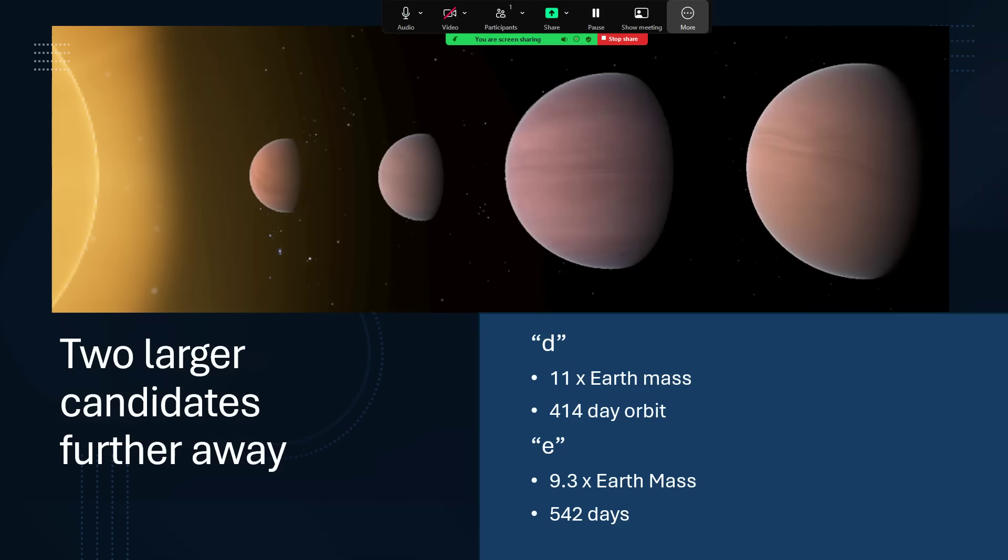And we also have two candidates, D and E, for larger planets, super-Earths, maybe mini-Neptunes, at 11 and 9.3 times the Earth's masses. And you can see the orbital periods there, several hundred days each further out. So this is quite a nice, interesting star system for planets, probably. And I bet there are more when we come to being able to detect them, because we're still not really finding very many planets that are smaller than the Earth in terms of mass.